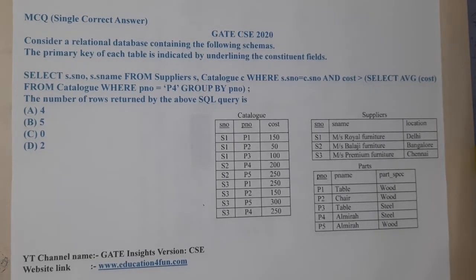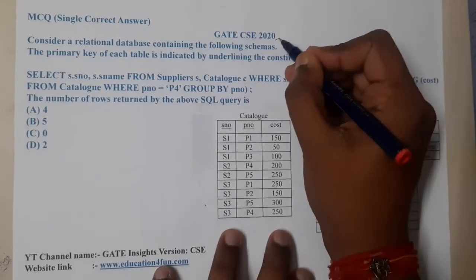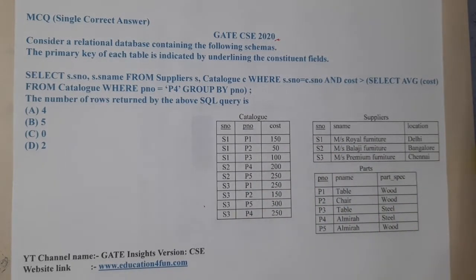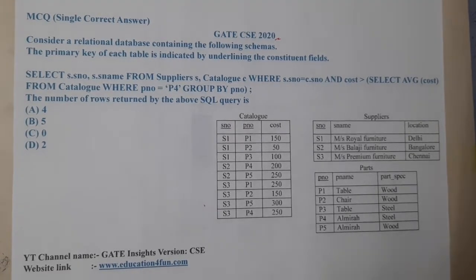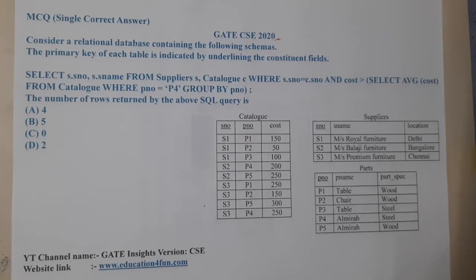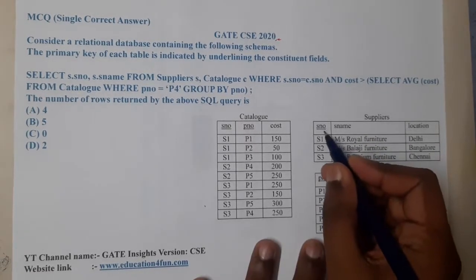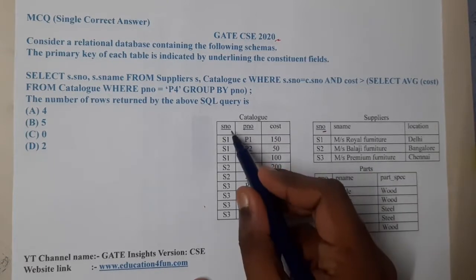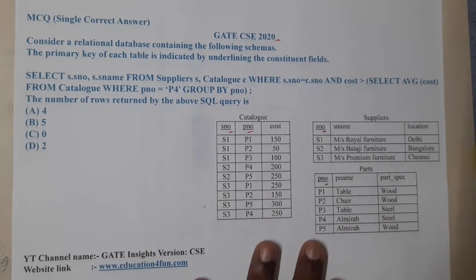Welcome back. In this lecture, let us go through the next question. This question belongs to GATE CSC 2020. The given question asks us to consider a relational database containing the following schema. The primary key of each table is indicated by underlining — here the primary key is serial number, here it is parts number, and here it is serial number plus parts number.